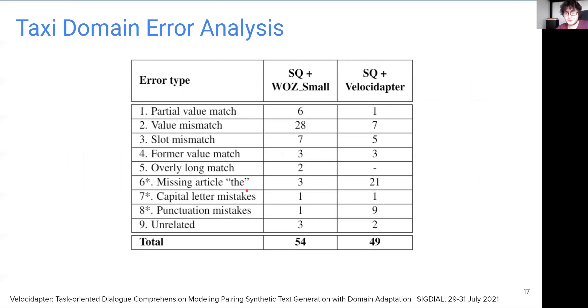Finally, we also do a fine-grained error analysis in taxi domain, comparing VelocAdapter results with the base model. We characterize each error under nine different groups to get a better sense of the improvements made by our system. These errors are as follows. First one is partial value match, which occurs when the model predicts only a part of the slot value. Then comes value mismatch, which happens when the model predicts a reasonable value for a given question, but it is not the correct answer. Slot mismatch is an error where the model answers a question for one slot with another slot. Whereas, former value match is when the model cannot follow the mind-change scenario and predicts the previous value.